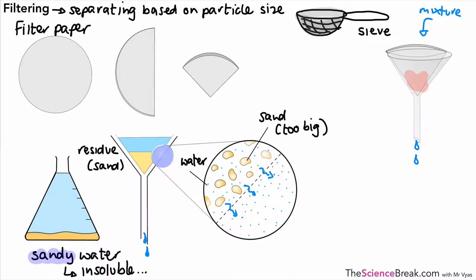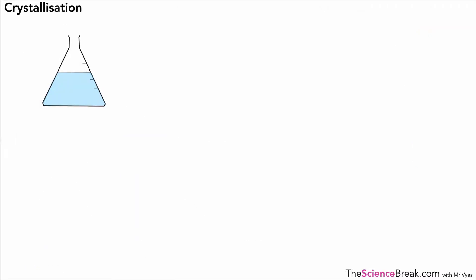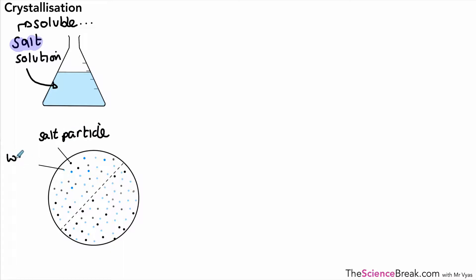That's filtering, based on the idea of particle size. The next thing we're going to look at is what we call crystallization. In this example, imagine we have salt and water, a salt solution. The salt, as you know, can dissolve. There won't be large particles of salt in there, and the salt dissolves because it is soluble. The reason why we can't use filtering is because if we look at the particles of salt and the particles of water, they are both very tiny and they can both pass through the filter paper. So filtering won't work in this example. The salt particles go through and the water particles go through as well.